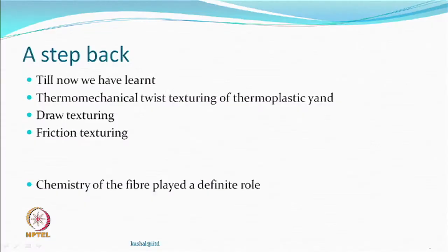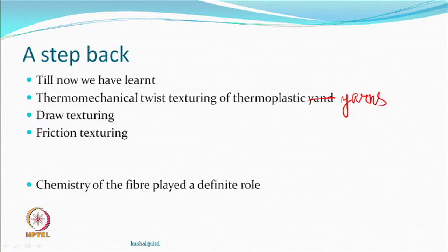Till now, what we have done is we have seen texturing — which is twist texturing of thermoplastic yarns — and in this we have done draw texturing and friction texturing. What we have learnt is that the chemistry of fibre plays a definite role in thermomechanical twist texturing.